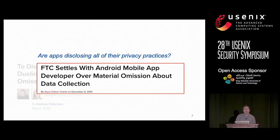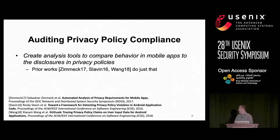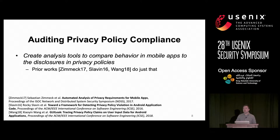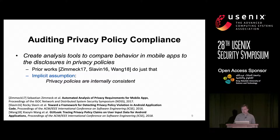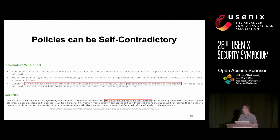We need a way to audit these applications. There has been some prior work at ICSI, S&P 2016/2018, and NDSS that looked at creating tools to audit app behavior and make sure they comply with what they're actually stating in their privacy policy. However, when looking at the consistency models used in this work, we found they all have this implicit assumption that the privacy policies themselves are internally consistent — and we're going to invalidate that assumption today, because privacy policies can be self-contradictory.